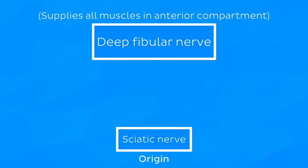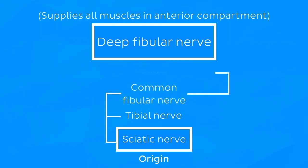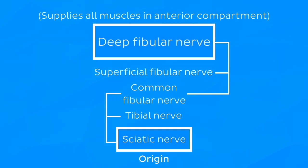The sciatic nerve bifurcates into the tibial nerve and the common fibular nerve, and the common fibular nerve then divides into the superficial fibular nerve and our nerve of interest, the deep fibular nerve.